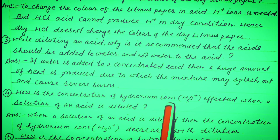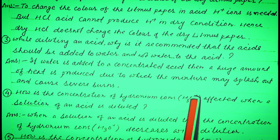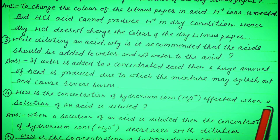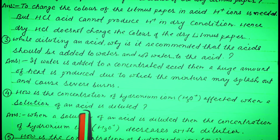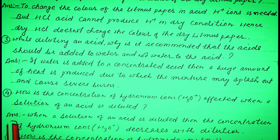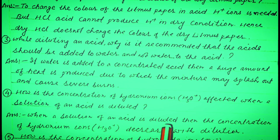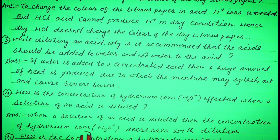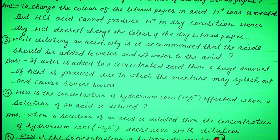Question No. 4: How is the concentration of hydronium ions (H₃O⁺) affected when a solution of an acid is diluted? Answer: When a solution of an acid is diluted, then the concentration of hydronium ions (H₃O⁺) decreases with dilution.